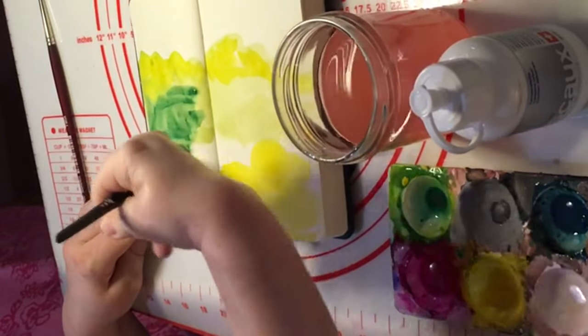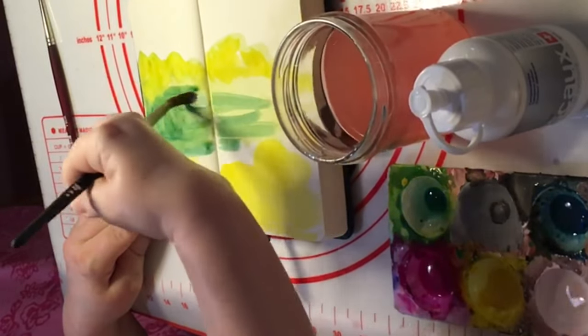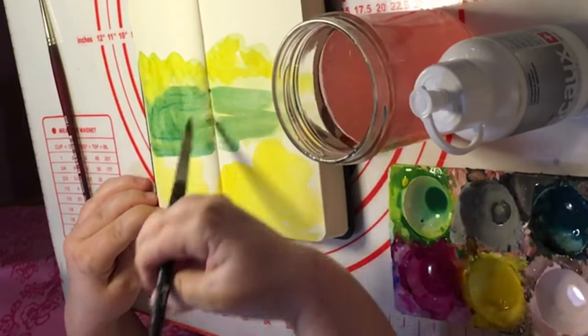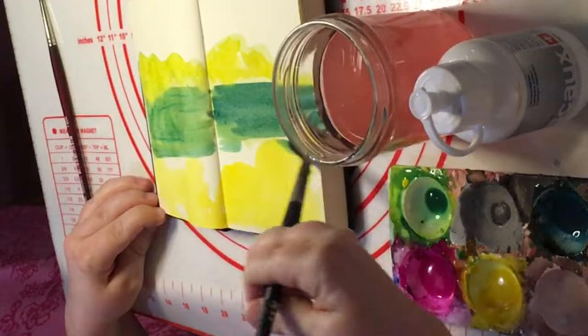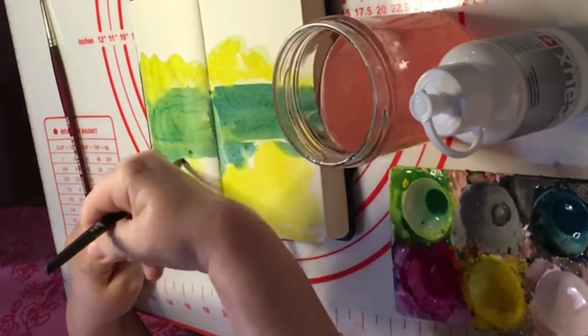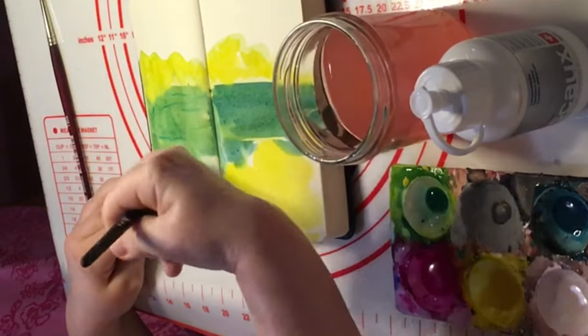And I'm just adding in my already pre-made darkish green. Which is not from a tube. It's what I've made up myself. So it's like a bit of black and blue and yellow. Just to make a darkish green.